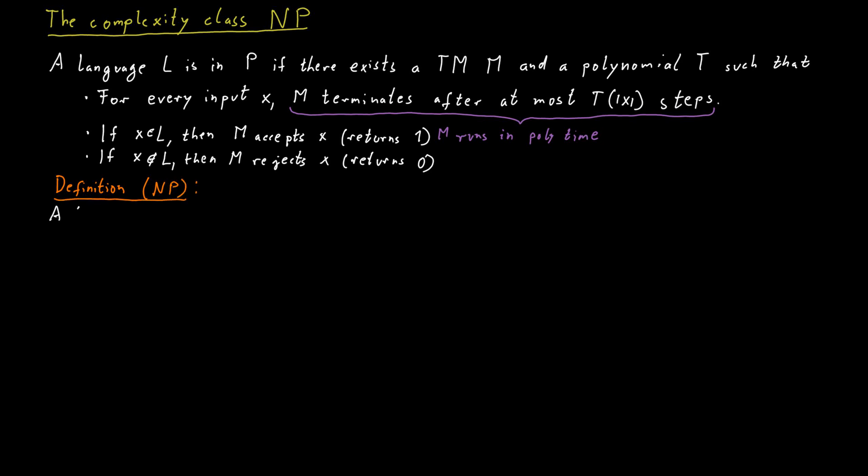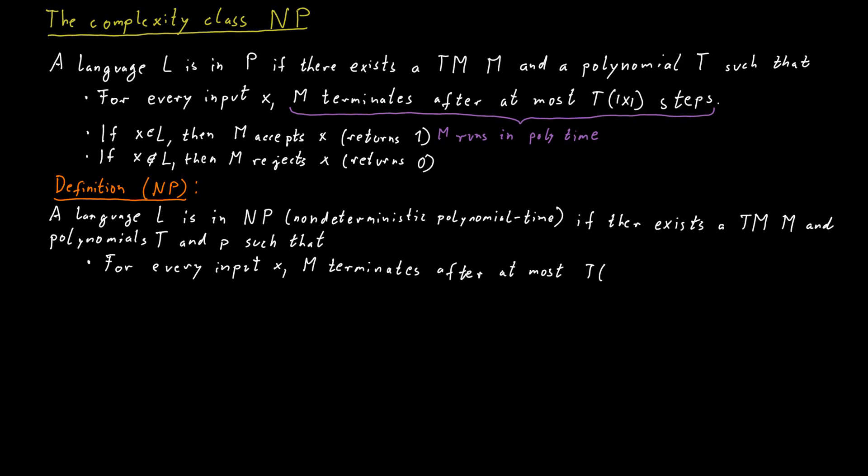The complexity class NP, which stands for non-deterministic polynomial time, is the following. A language L belongs to the class NP if there exists a Turing machine M and polynomial functions T and P such that for every input X, the machine M terminates after at most T of size of X many steps.